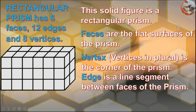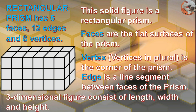Edge is a line segment between faces of the prism. Here are examples of edges. A three-dimensional figure consists of length, width, and height.